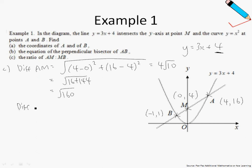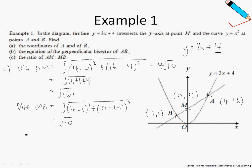Now let's find the distance MB using the same distance formula with the coordinates of M and B. Simplifying, the distance MB is just root 10. So the ratio AM to MB is 4 root 10 to root 10, and simplifying this, we get 4 to 1.